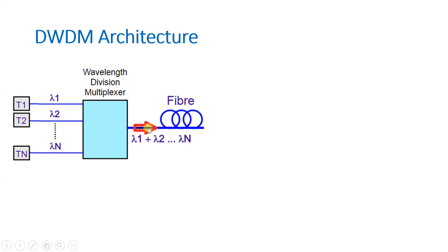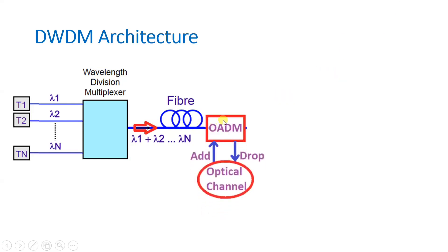After the multiplexer, the signal is forwarded on fiber and there can be an OADM — an Optical Add Drop Multiplexer. The OADM is utilized to add or drop a wavelength in the optical channel. In between the network, where there is a need to connect some users, OADM can add a channel, or where there is a receiver, it can drop a channel. OADM increases the capacity of the network.